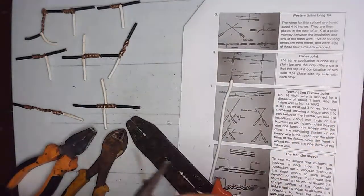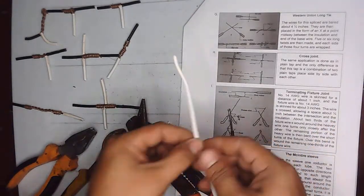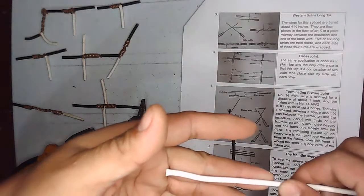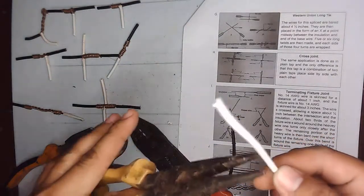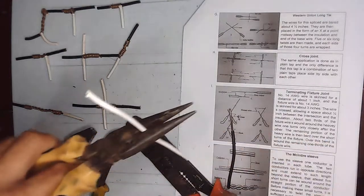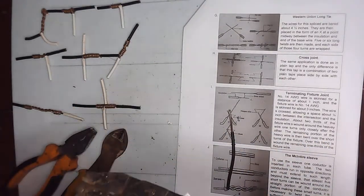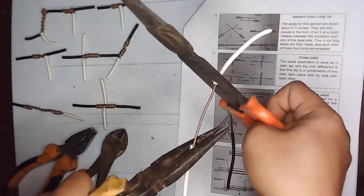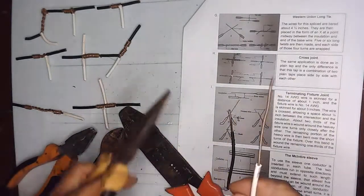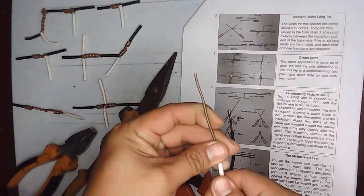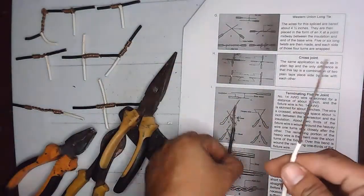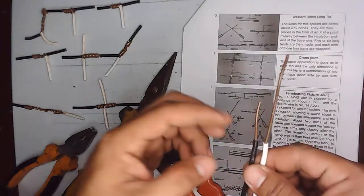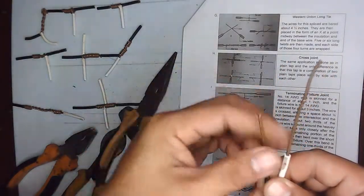And the longer wire will be stripped about three inches. So the shorter wire will be stripped one and a half, and the longer wire will be stripped about three inches.